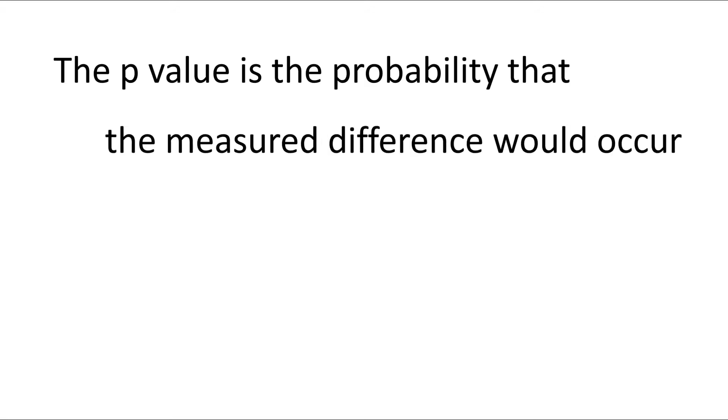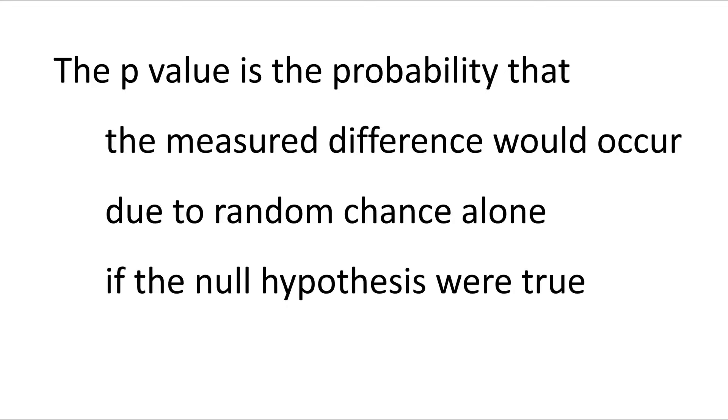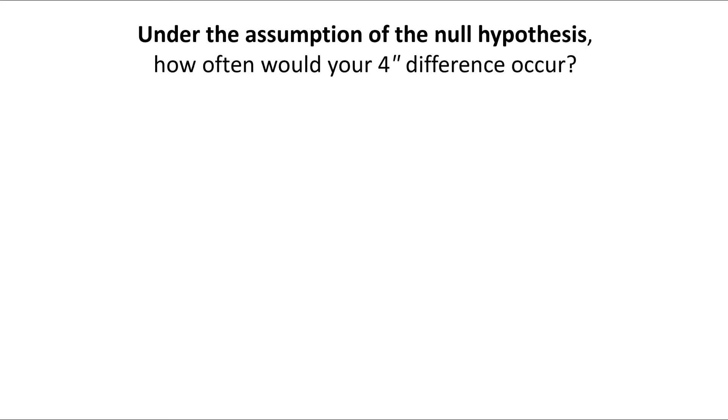So what's a p-value? It's the probability that the measured difference, the 4 inches you found, would occur due to random chance alone if the null hypothesis were true. To understand this, let's see some examples of p-values. How often does your 4 inch difference occur? The p-value answers that question. Remember we're assuming the null hypothesis is true.